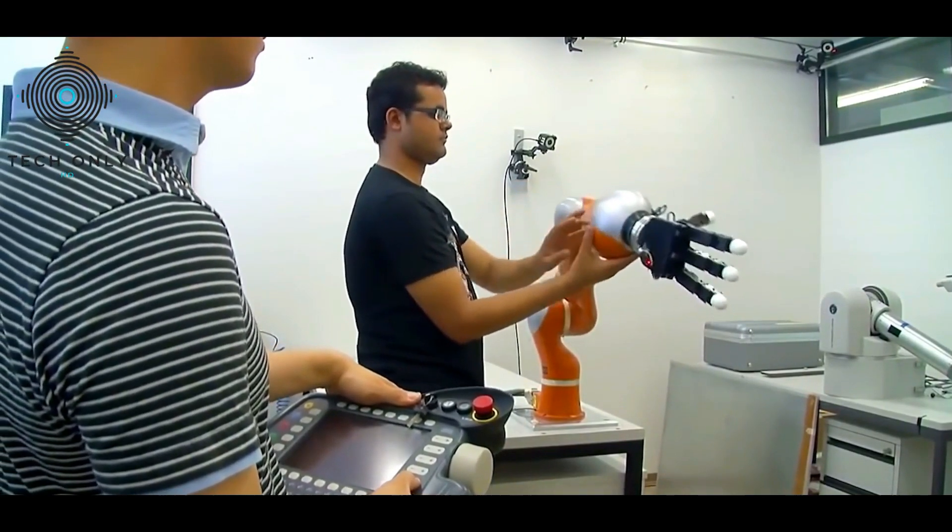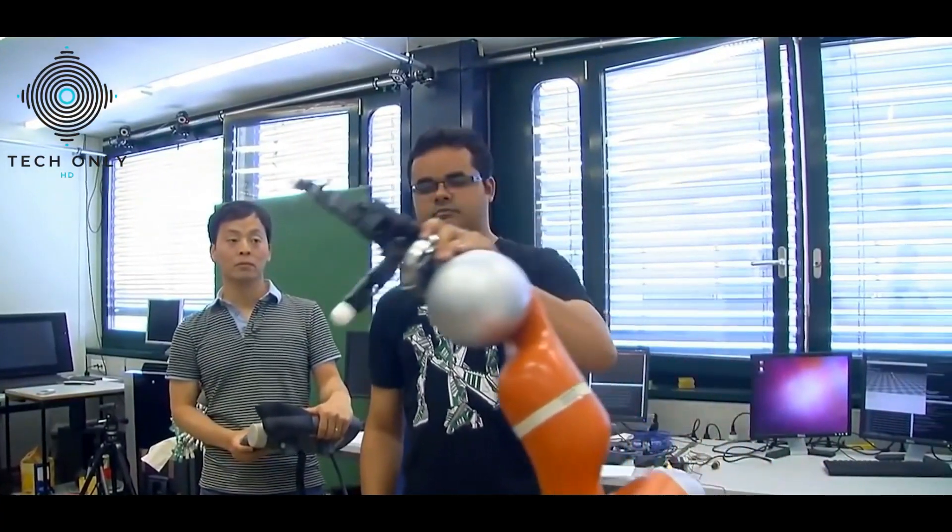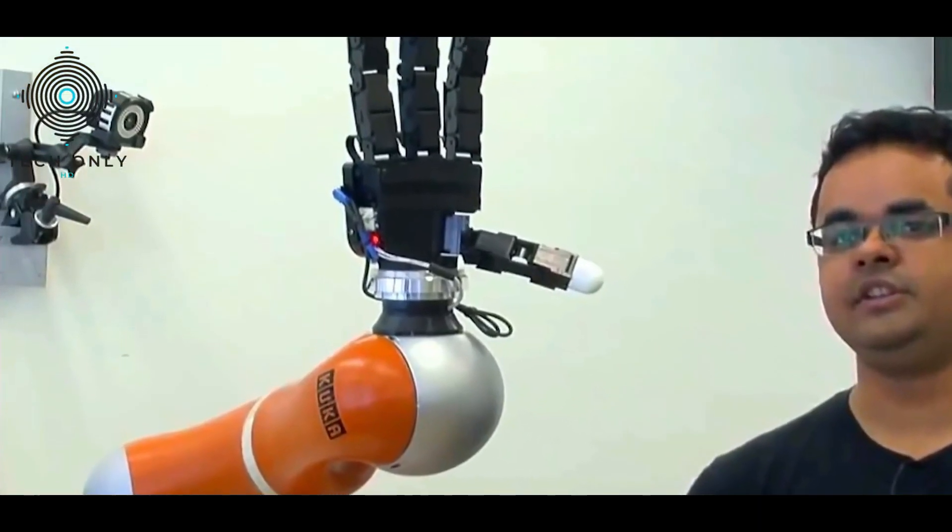The arm measures 1.5 meters in length and has three joints, along with a hand and four jointed fingers.